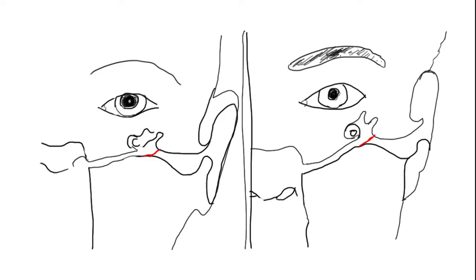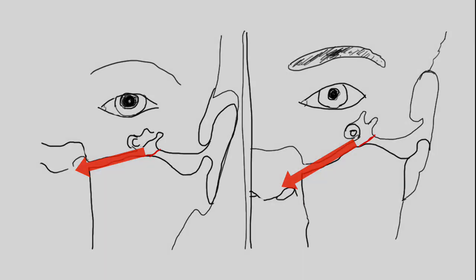Now you have the three ingredients for a middle ear infection: a closed eustachian tube, accumulation of fluid into the middle ear cavity, and inflammation caused by an accumulation of bacteria and your immune response. One last thing to consider is why infants and children get many more middle ear infections than adults. As you can see in this diagram, the orientation of the eustachian tube in infants is much more horizontal than it is in adults. We believe it's this orientation that allows more secretions into the eustachian tubes and creates more opportunity for blockages.